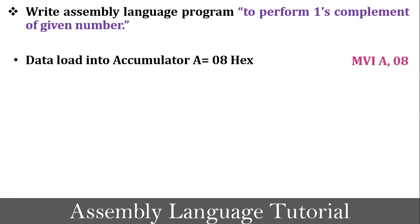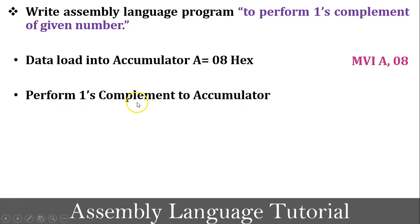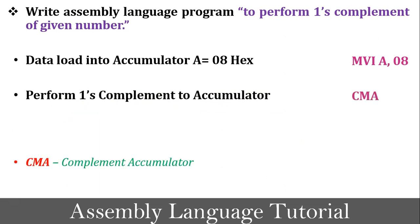Here 08 is in hexadecimal format. The next task is to perform one's complement on the accumulator, so the instruction is CMA — complement accumulator content. It performs one's complement on the accumulator content. After execution of the CMA instruction, the accumulator content becomes F7. So F7 is the one's complement of 08.